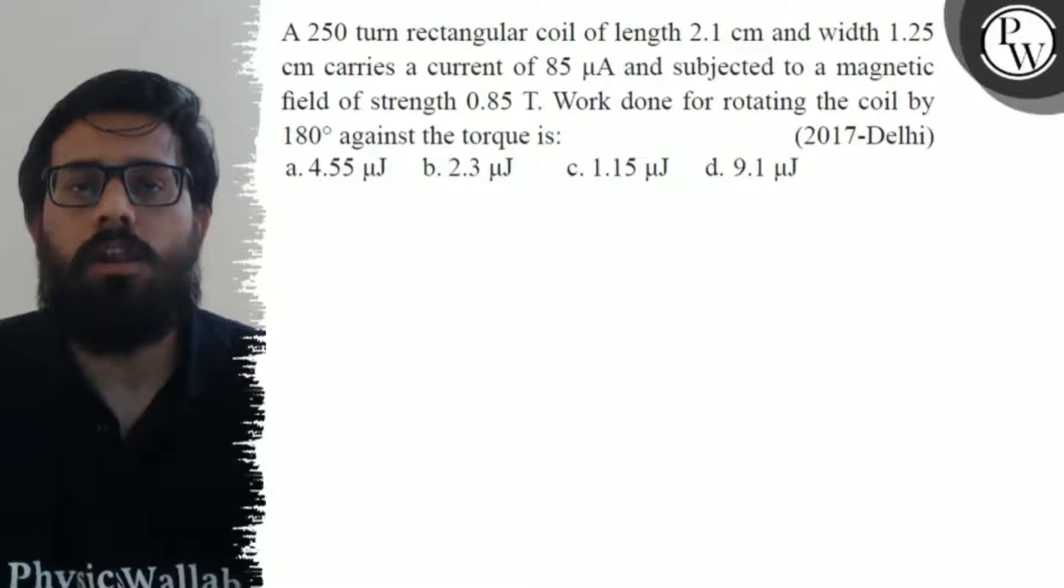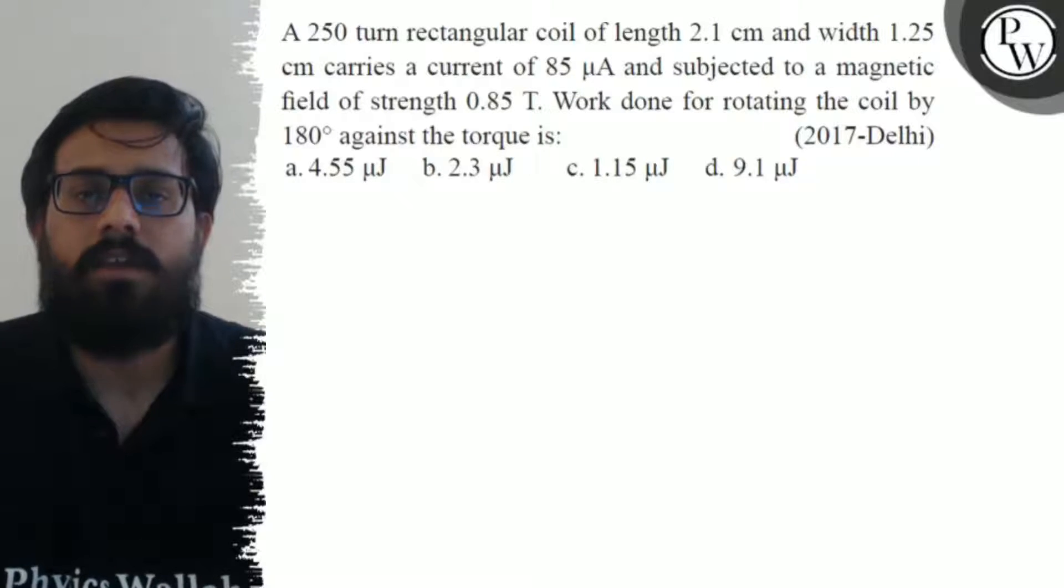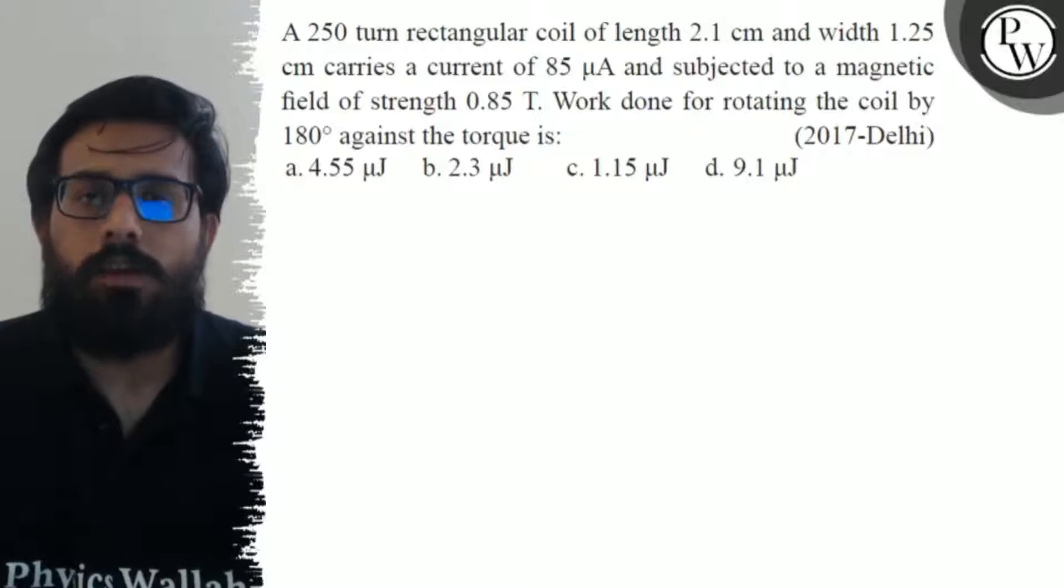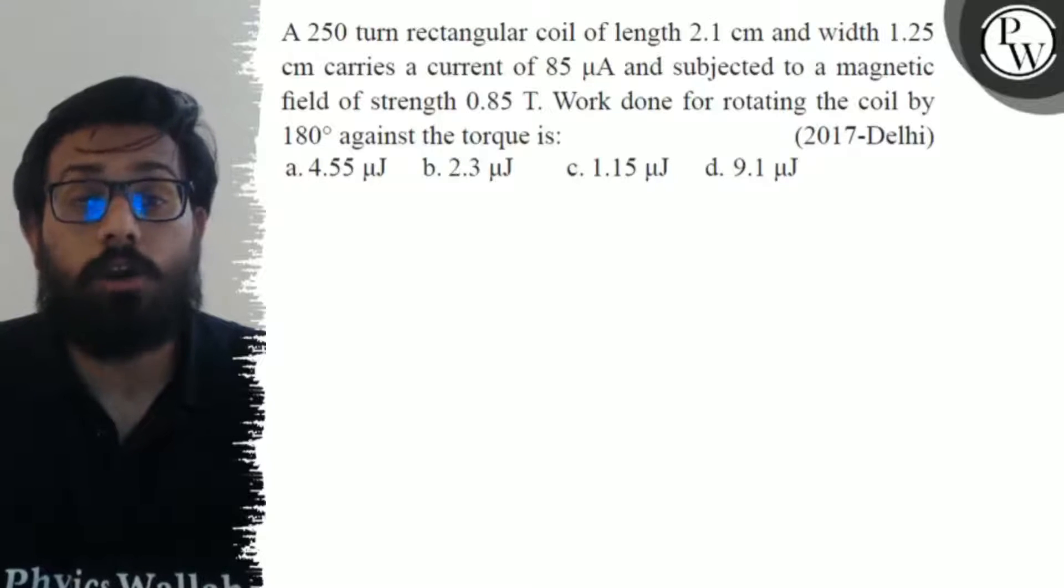A 250-turn rectangular coil of length 2.1 centimeters and width 1.25 centimeters carries a current of 85 microamperes and is subjected to a magnetic field of strength 0.85 Tesla.